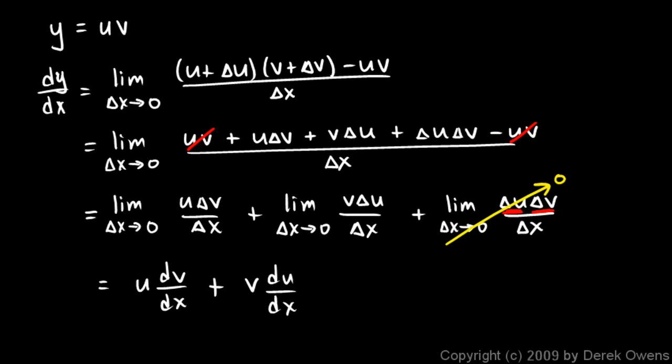And so that numerator is two really small things being multiplied together. So the numerator is getting smaller faster than the denominator. And that's why as delta x approaches 0, this whole term becomes 0.